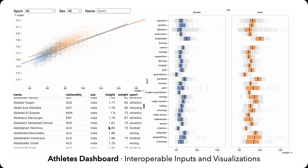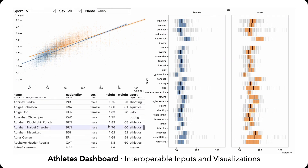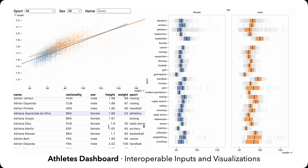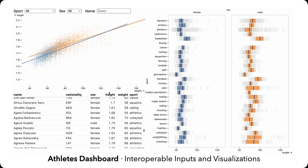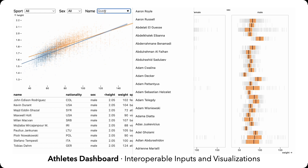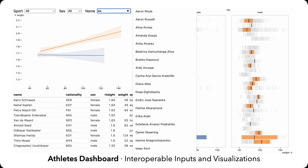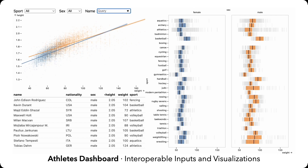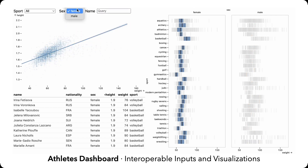Mosaic provides a standardized selection abstraction for linking across tables, visualizations, and input widgets such as sliders, search boxes, and menus. All of these components are linked via dynamic parameters and coordinated queries.